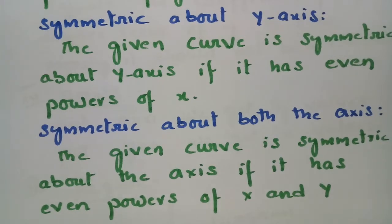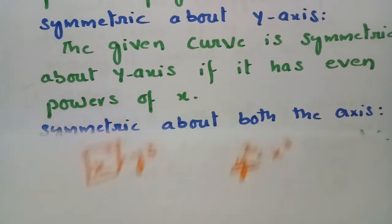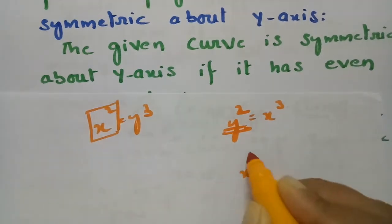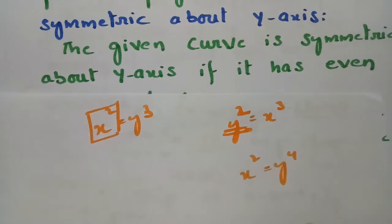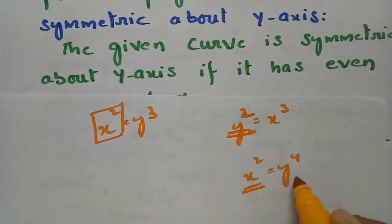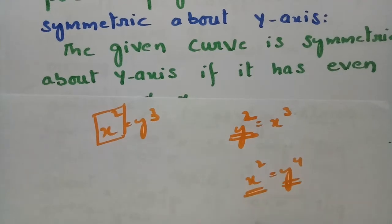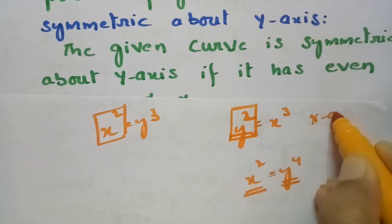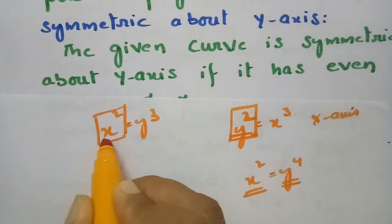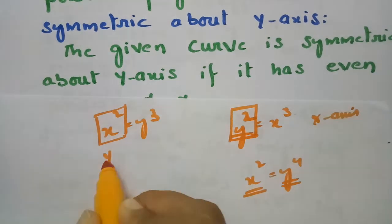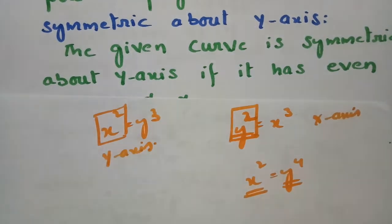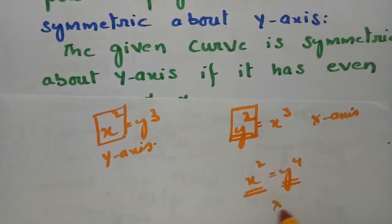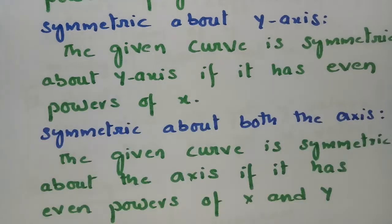The next one is symmetry about both axes. The given curve is symmetric about both axes if it has even powers of x as well as y. So: even powers of y → symmetric about x-axis; even powers of x → symmetric about y-axis; even powers of both x and y → symmetric about both axes.